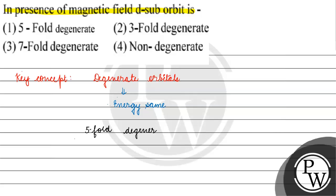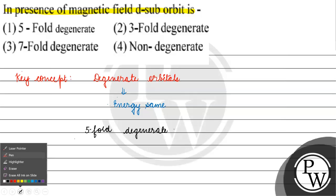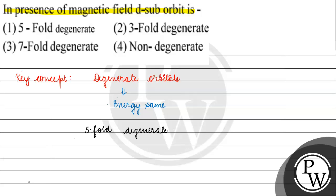If we put the D sub orbit in the magnetic field, what will you find? You will find the magnetic quantum number (ml) values: +2, +1, 0, -1, -2.